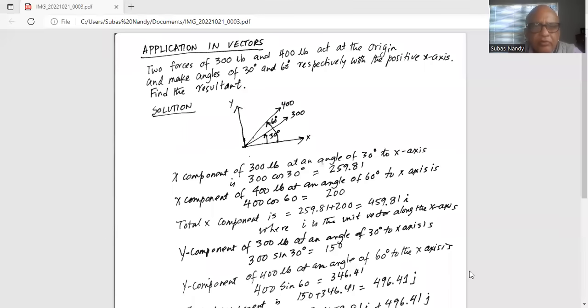Good day everybody. Today we are going to talk about an application with vectors. Two forces of 300 pounds and 400 pounds act at the origin and make angles of 30 degrees and 60 degrees respectively with the positive x-axis. Find the resultant.